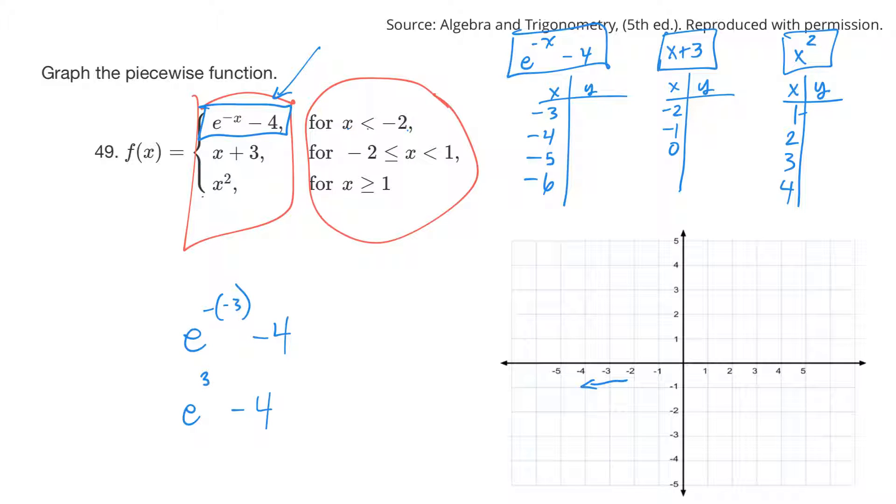I have a calculator. Where's my e to the button? Here we go. So e to the power of 3, and then minus 4. That gives me 16, about 16. So this would be 16 right there. If I plug in negative 4 in, I get 50. I'm going to start getting real huge numbers here.